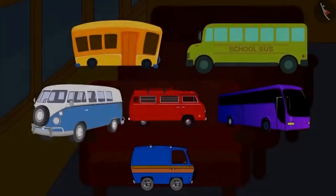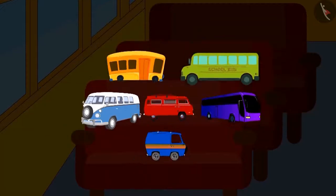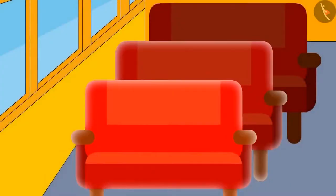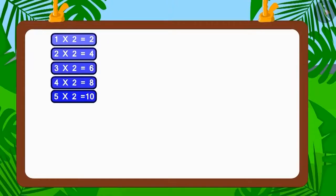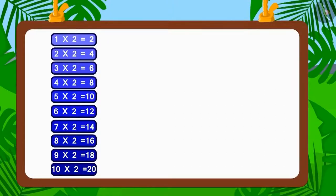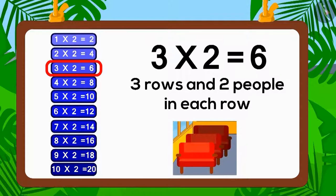So, children, can you find out more such buses where six people can sit? But remember that the number of people in each row should be equal. Let's find all the factors of six and solve this puzzle. Does the number six appear in the table of two? Yes, three multiplied by two is six. Therefore, two is the factor of six. So, if two people sit in each of three rows, how many people would be able to sit? Six.